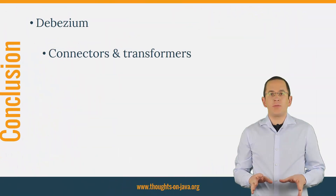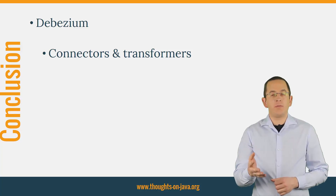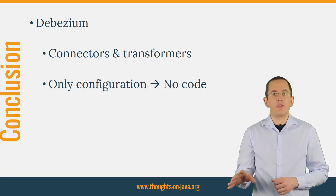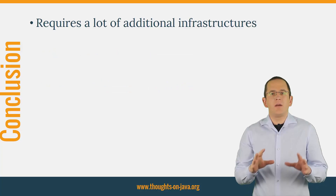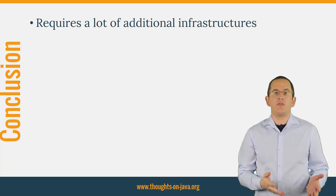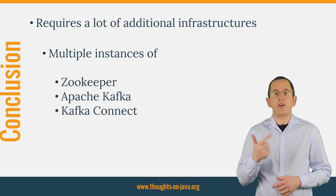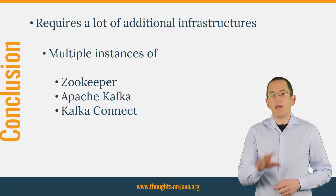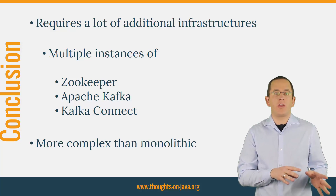We have used the Outbox pattern to update the database and publish events in Apache Kafka. Debezium provides a set of connectors and transformers that you just need to configure to publish an event whenever you write a new record to the Outbox table — that makes the implementation of the Outbox pattern pretty simple. But this pattern also requires a lot of additional infrastructure. In a highly available production environment, you need to run and manage multiple instances of ZooKeeper, Apache Kafka, and Kafka Connect, which makes the architecture of your system way more complex than it would be for a monolithic application.